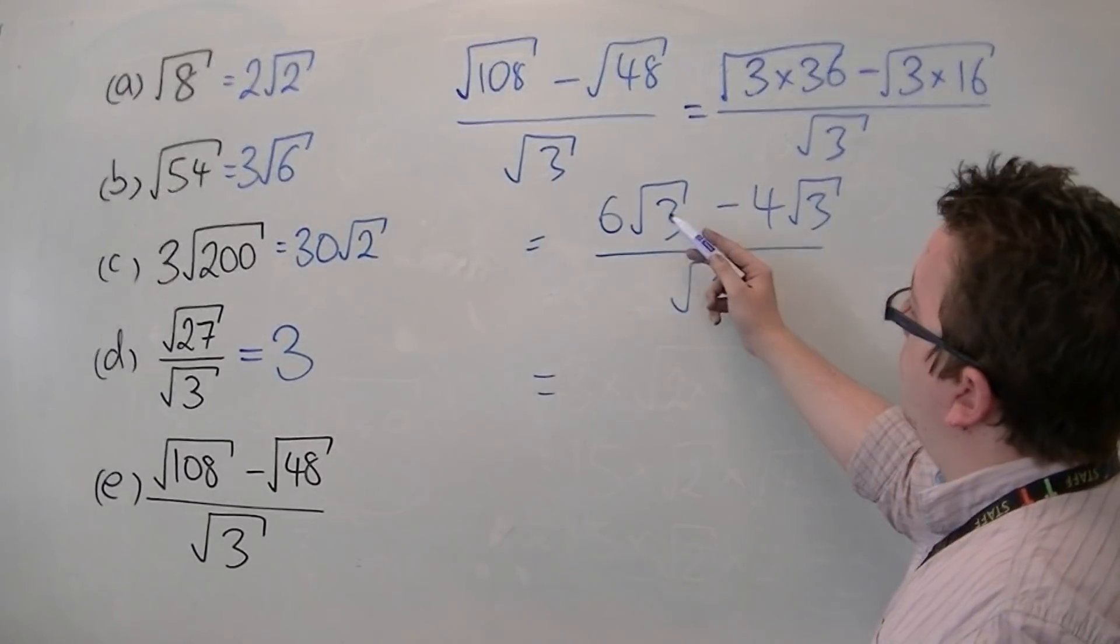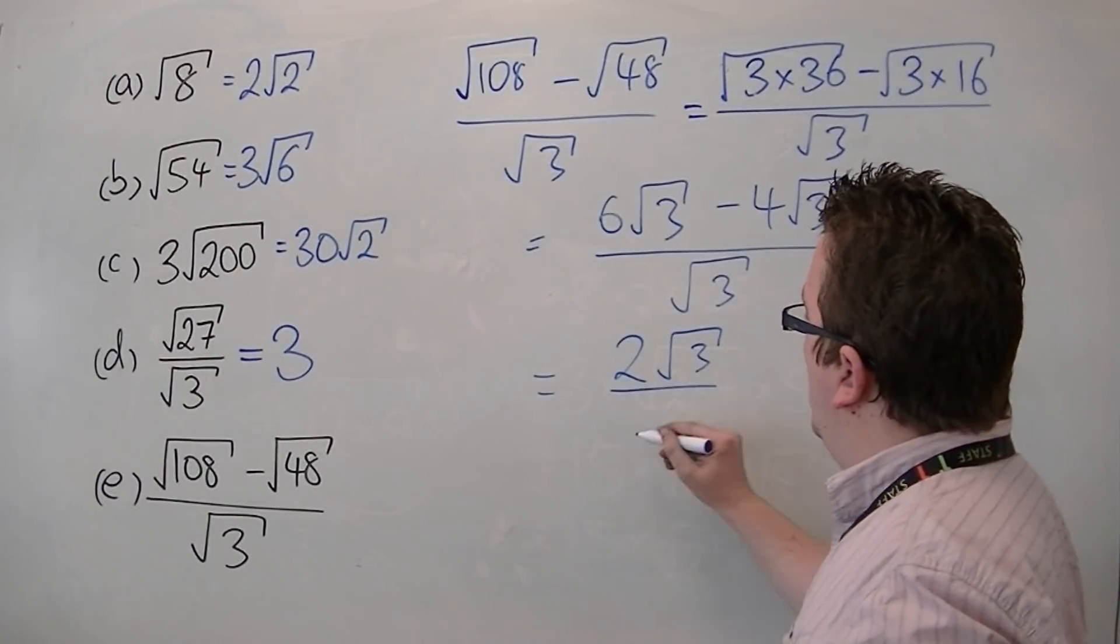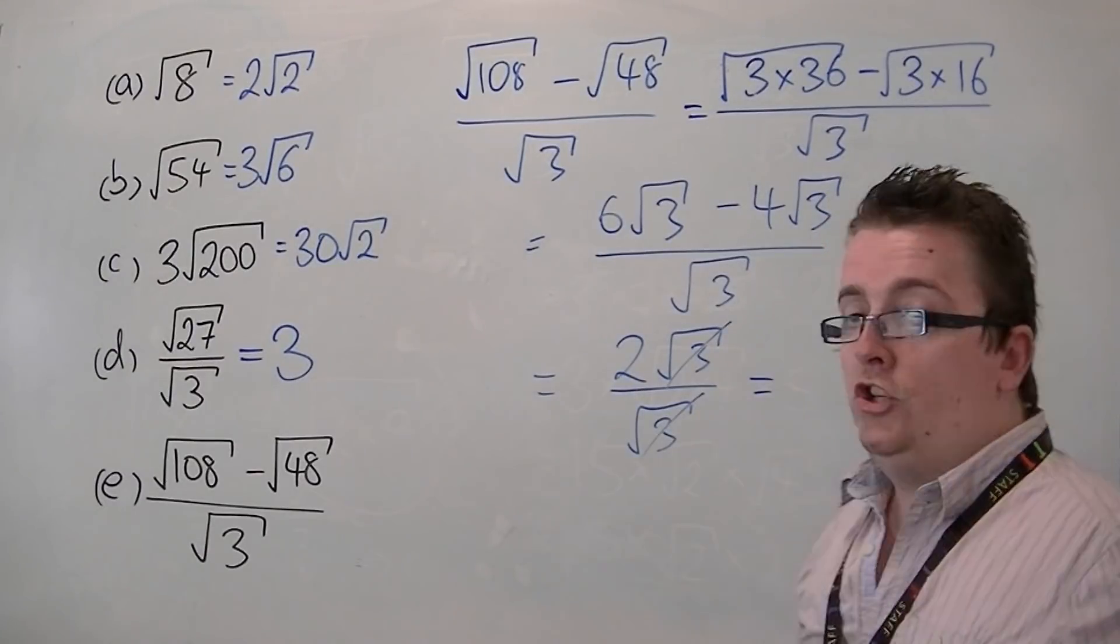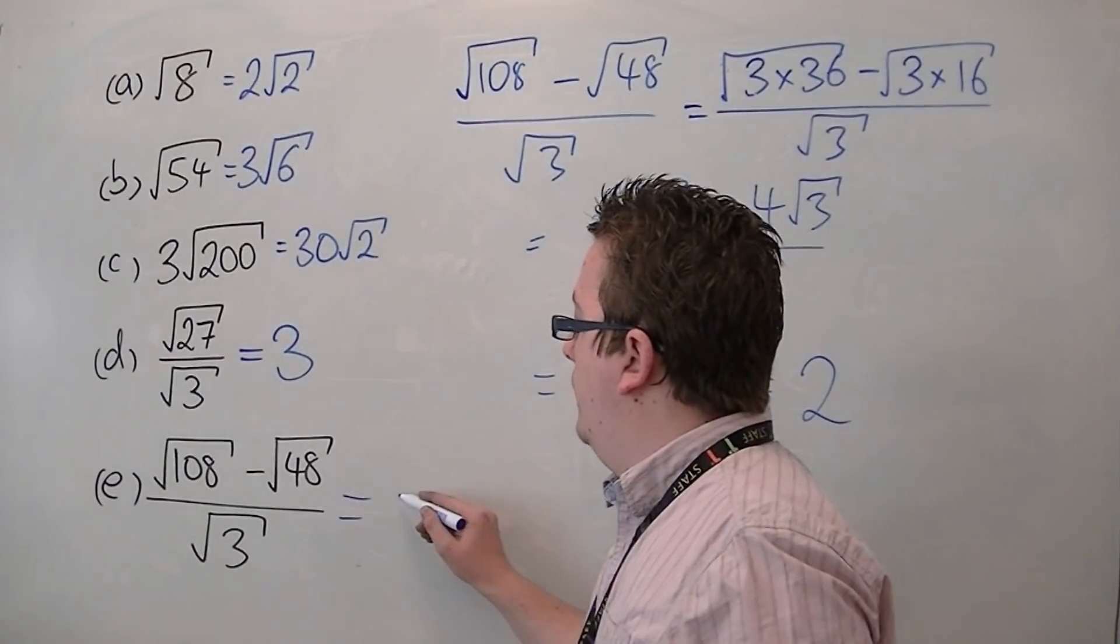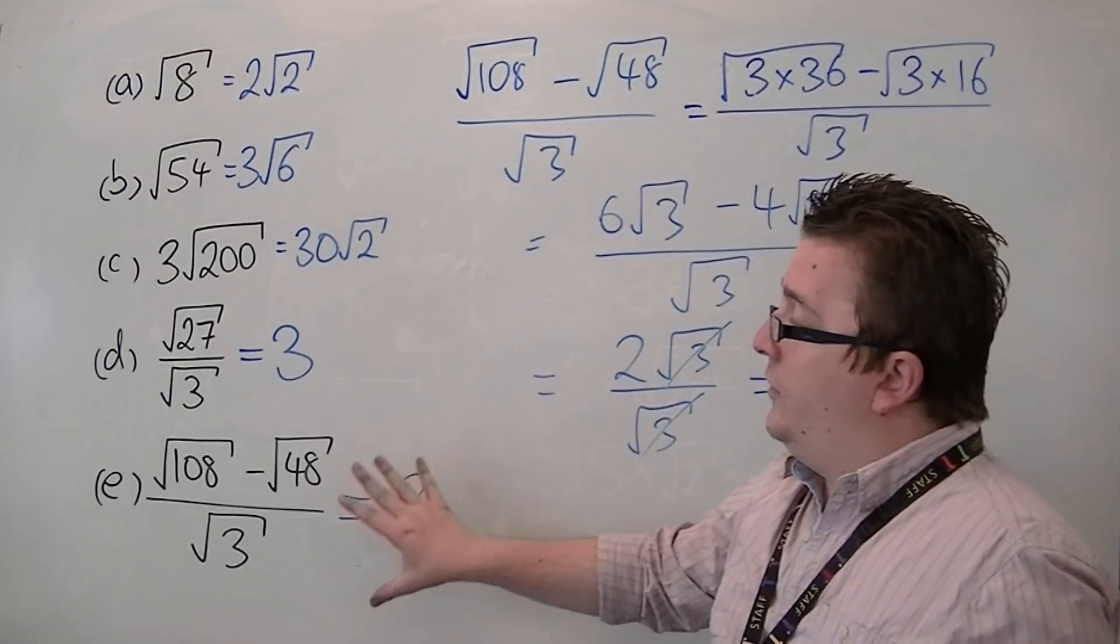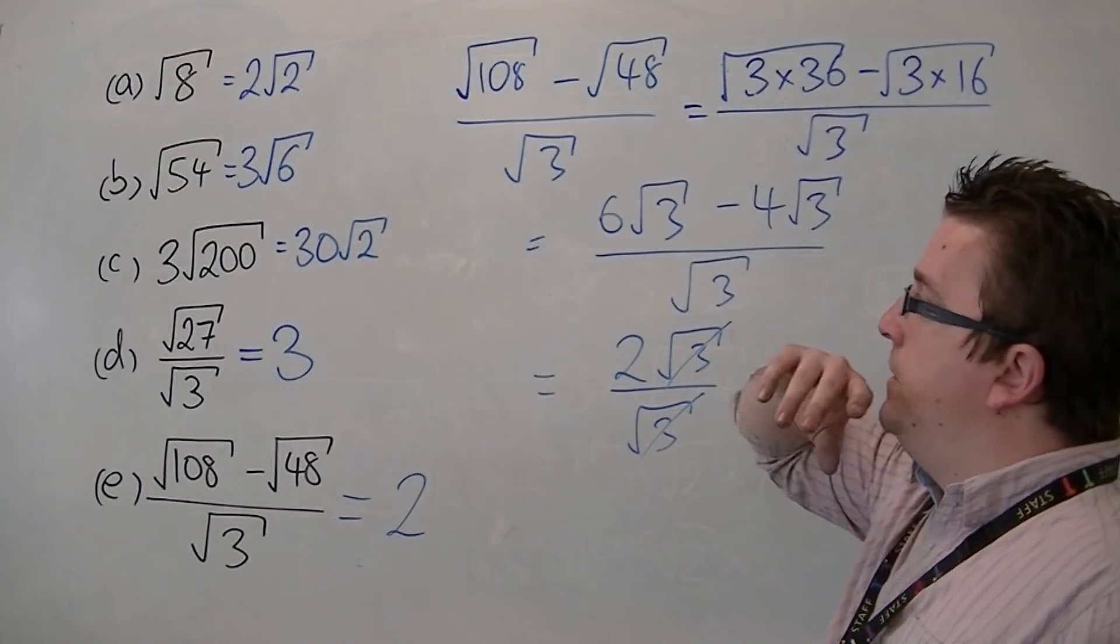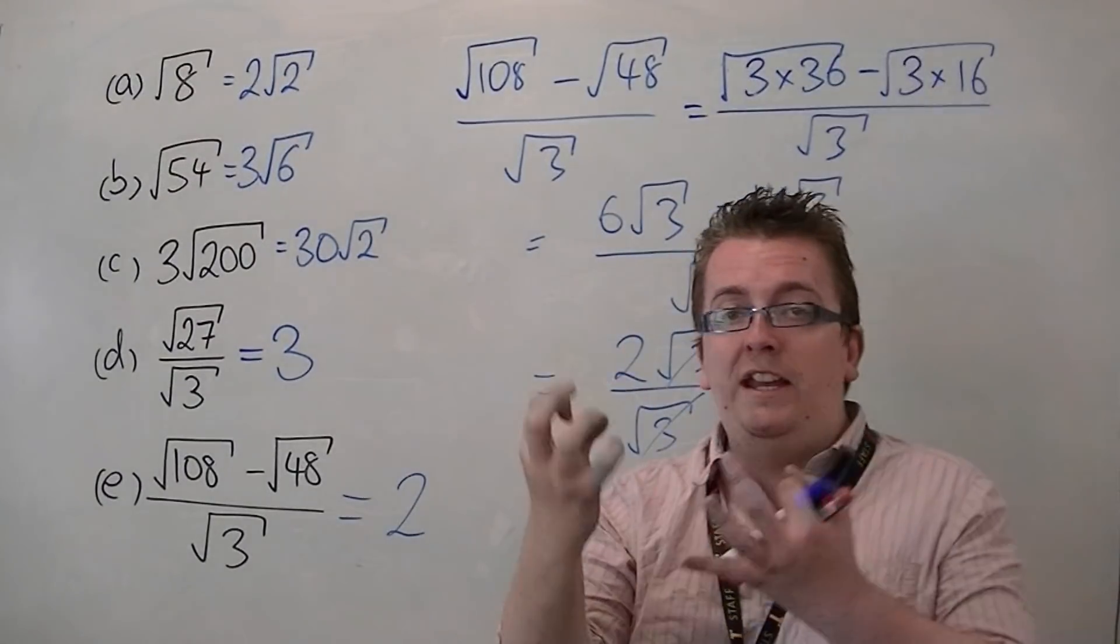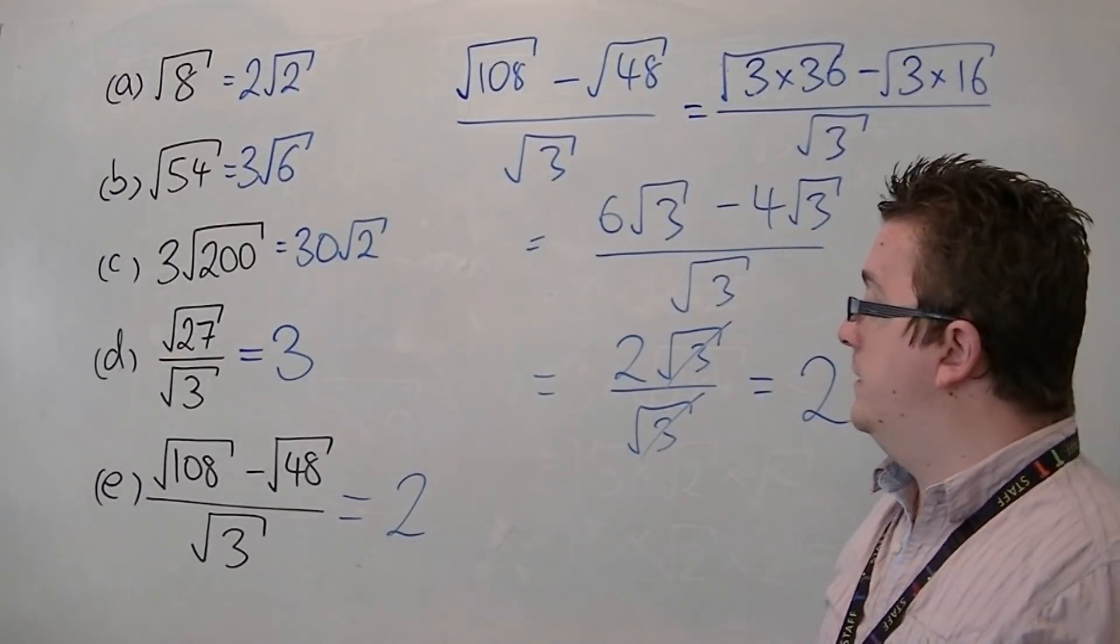So in the numerator, we've got 6 root 3 take away 4 root 3 is 2 root 3 divided by root 3. So the root 3s will cancel each other out, and that will leave you just with 2. So this last one has answer 2. So simplifying surds, they can be a little bit more fiddly when you get down to these last questions. But really, it's just a case of simplifying each individual term and then putting all your answers together to see what you get in the end.